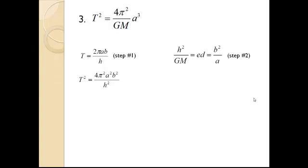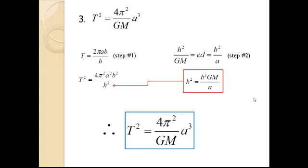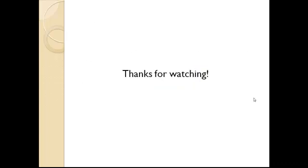In our final step, we need to show that the square of period T is proportional to the cube of the length of the major axes of its orbit. We know from step 1 that period T equals 2πab over h. We can square both sides to give us this expression. Here is the equation from step 2, and this can be rearranged to give us h squared, which equals b squared times GM over a. This can be substituted into the equation from step 1 to show that T squared equals 4π squared over GM times a cubed. Now, 4π squared over GM is just a proportionality constant and it is independent of the planet's motion. Therefore, T squared is proportional to a cubed, and this proves Kepler's third law. Thanks for watching, and I hope you enjoyed it.